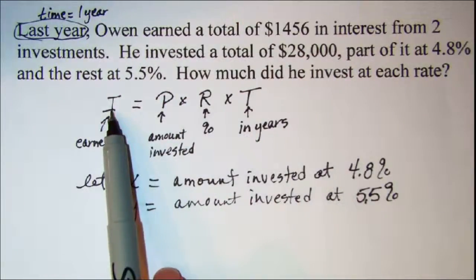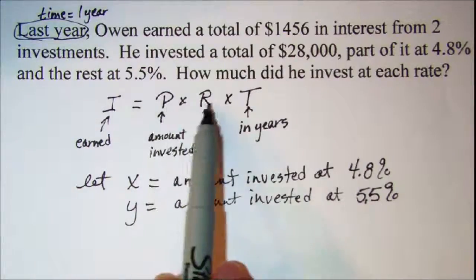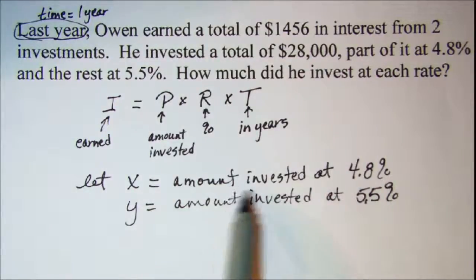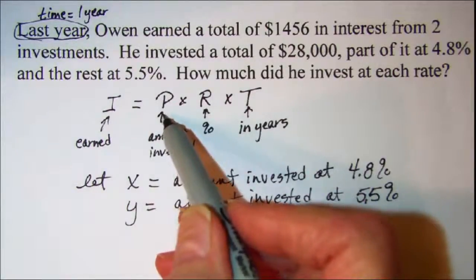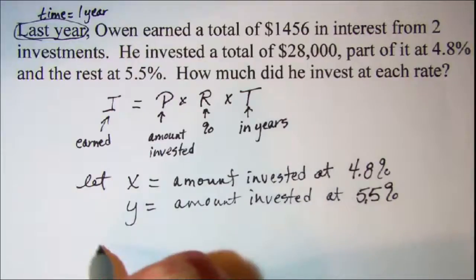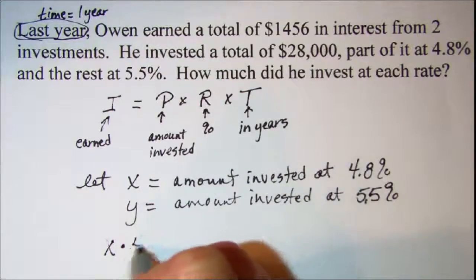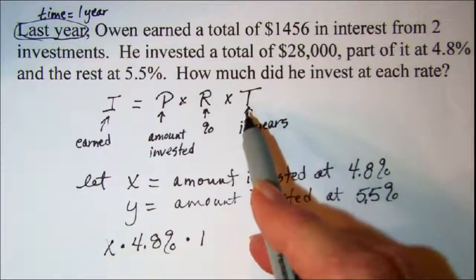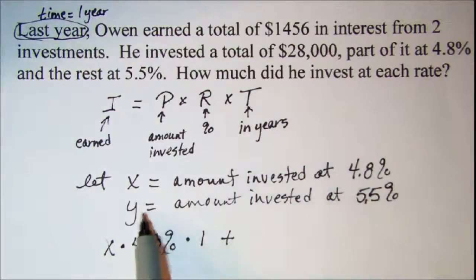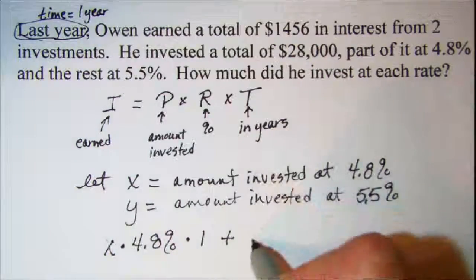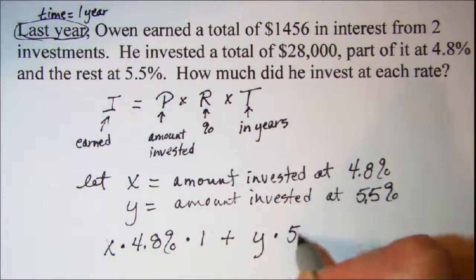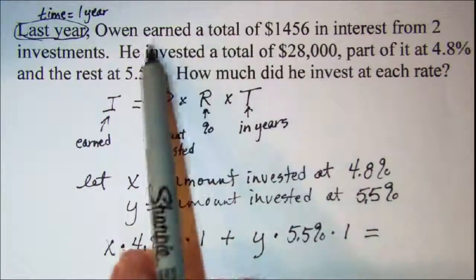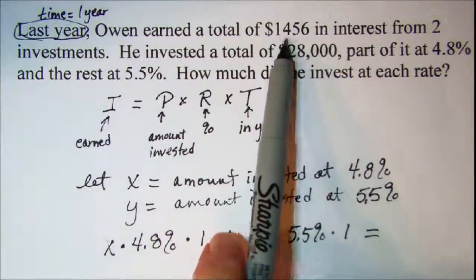So to get our total interest earned we're going to need the principal times rate times time for the x amount and then add to that the principal rate times time for the 5.5%. So the interest for the 4.8% is going to be x times 4.8% times 1 because our time is one year plus and then the interest earned on this amount is going to be y times 5.5% times 1. And that total interest we read here was $1,456.